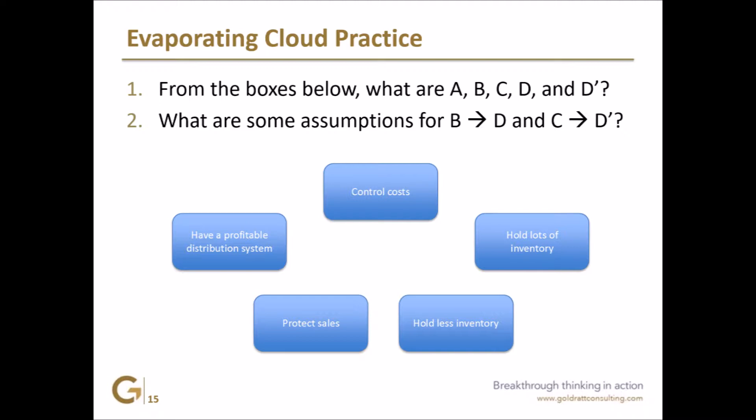Think about the parts of a lead time: you have transportation time, order lead time, and production lead time — generally those three parts. Is there uncertainty within that lead time? In production, because I ran out somewhere, it generates an emergency order that gets put into the queue, and now the regular scheduled production just got pushed back. That happens a lot in manufacturing — emergency orders come through because the customer is yelling or because we're stocked out.